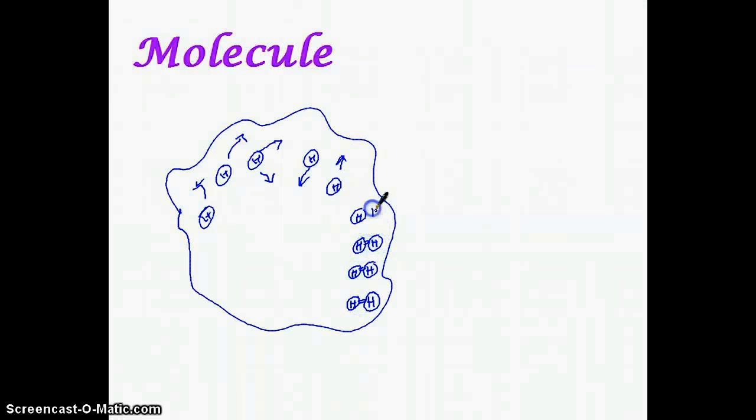So two hydrogen atoms bond together. However, this means that the smallest bit of hydrogen is actually made up of two atoms. A molecule of hydrogen is made up of two hydrogen atoms.